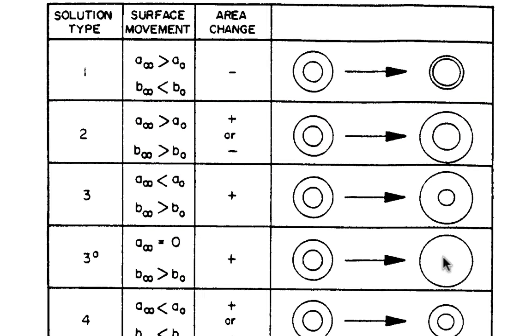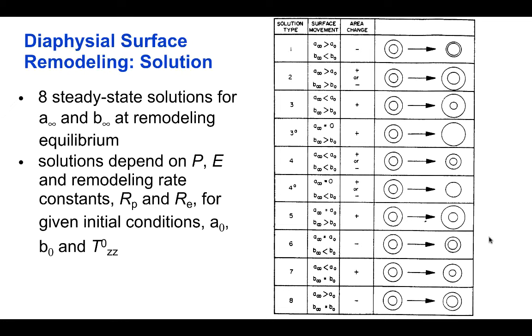And even cases where a_∞ is zero meaning that the hollow bone becomes completely solid. So it turns out that a number of these cases have been seen in different clinical or experimental conditions and so these can be used to determine which combinations of material parameters may be realistic for modeling growth and remodeling of bone in vivo.